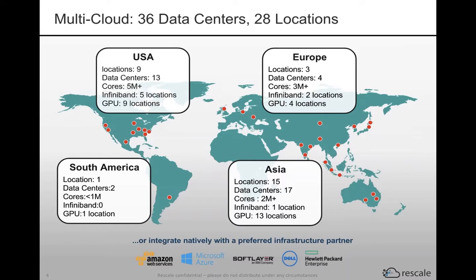Rescale is a multi-cloud environment, and this span of infrastructure partners enables us to offer a wide selection of different hardware configurations to our users. In addition to 36 data centers, we also have five distinct platforms. We have two platforms in the United States — one of these being for ITAR-controlled work only — and we also have dedicated platforms in Europe, Japan, and South Korea. These dedicated platforms are for users requiring that their data stay within one geographic region.